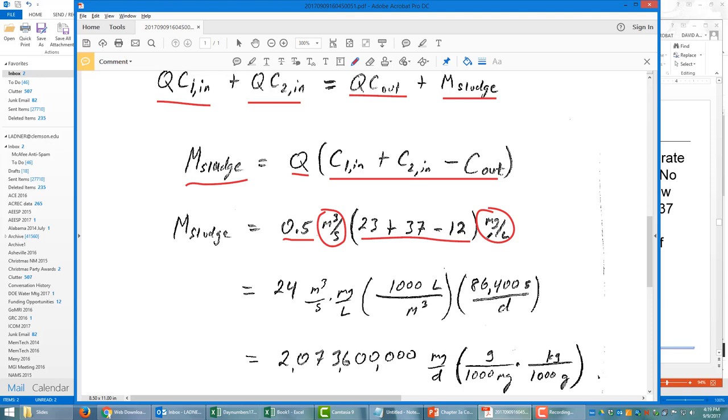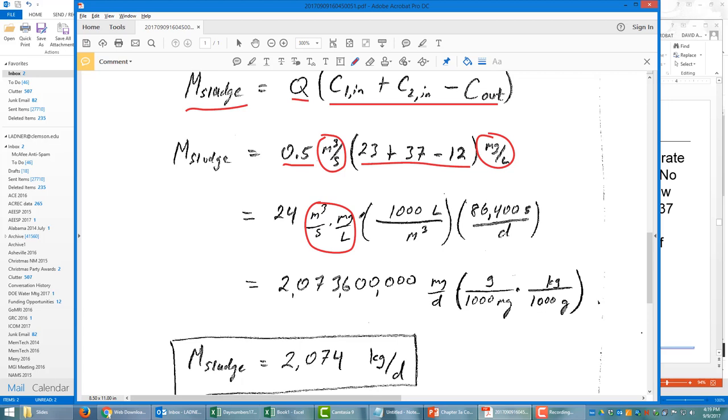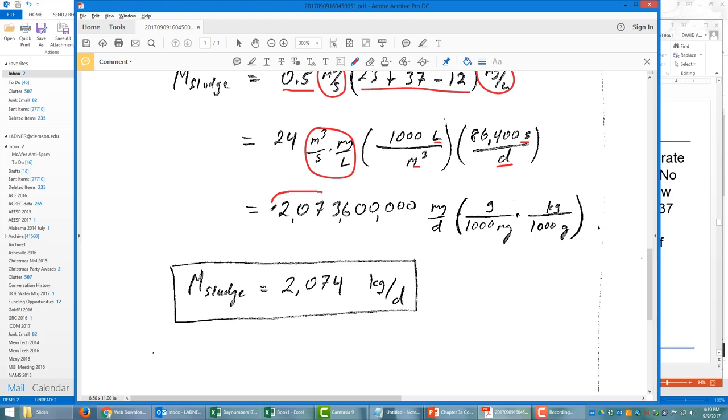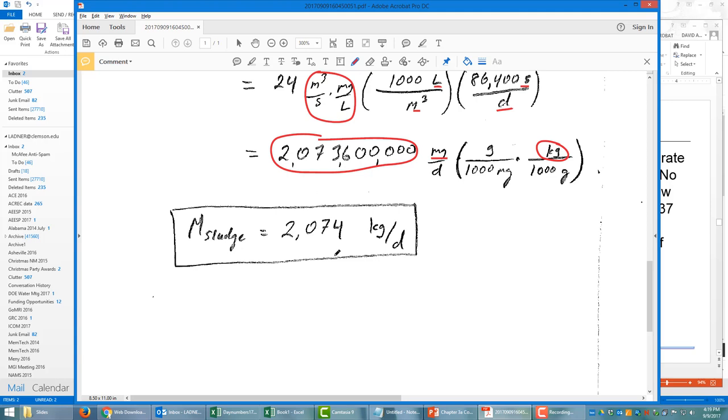And I want to point out that I am including the units here while I do my math, and that's helpful because it makes me realize that the units are not very compatible in this case, meters cubed per second times a milligram per liter. So we need to convert the liters to meters cubed, or vice versa, and we convert the seconds to days, and we end up with a very large number for the milligrams per day. So let's convert that to something more practical, kilograms per day.